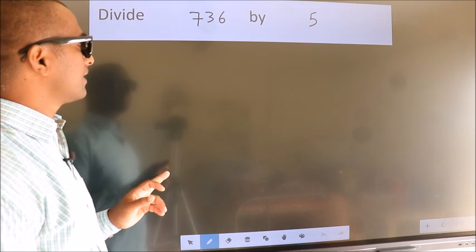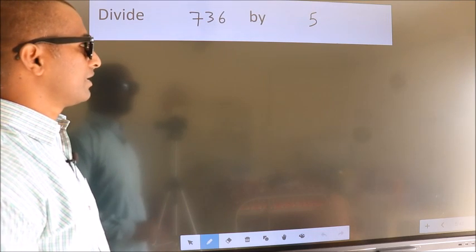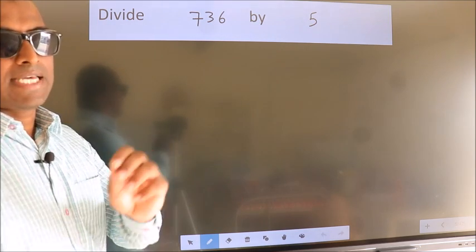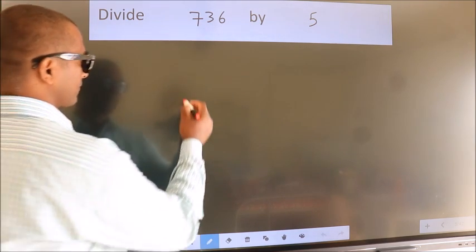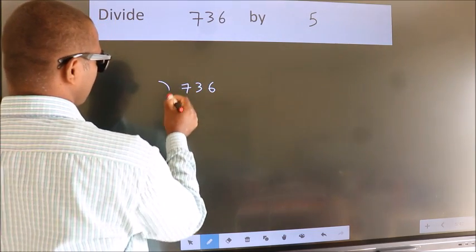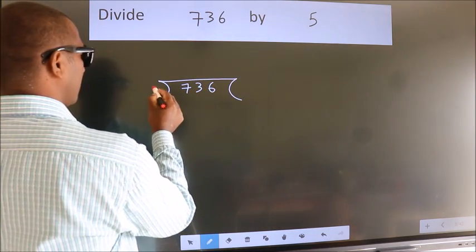Divide 736 by 5. To do this division, we should frame it in this way. 736 here, 5 here.